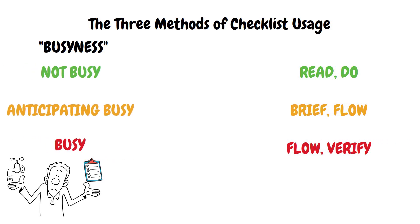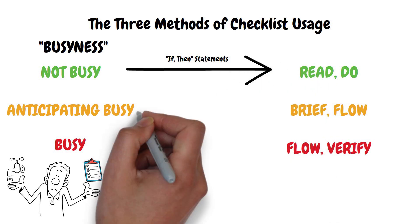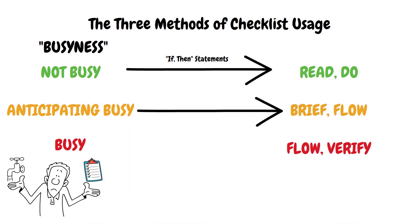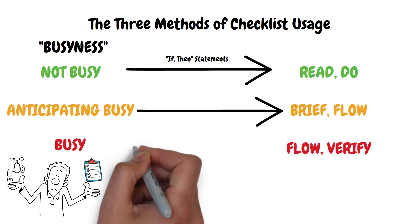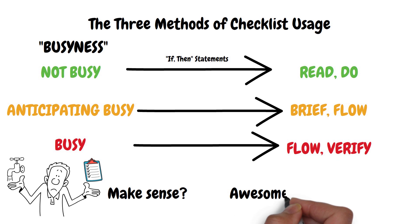Each level of busyness has a corresponding if-then statement that lines up your workload with the proper checklist procedure. If you're not busy, then read and do. If you're about to be busy, then brief and flow. If you're busy, then flow and verify. Here's how that applies to each phase of flight.